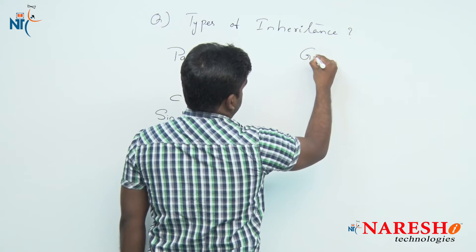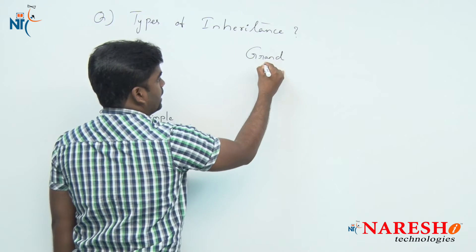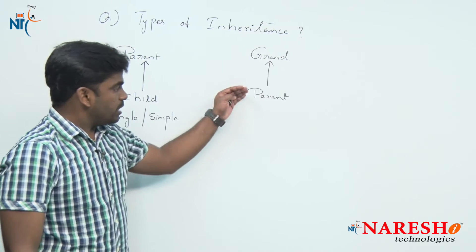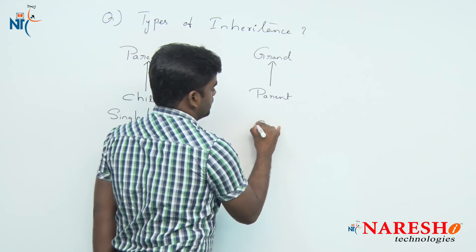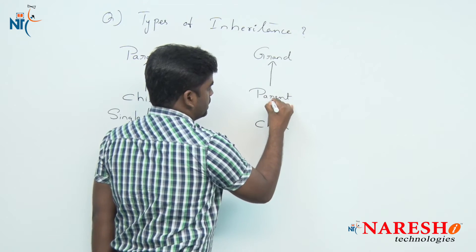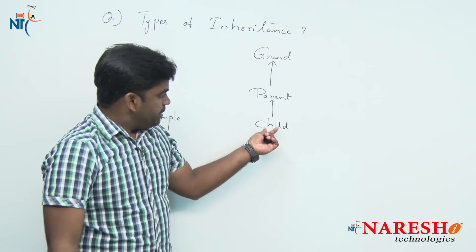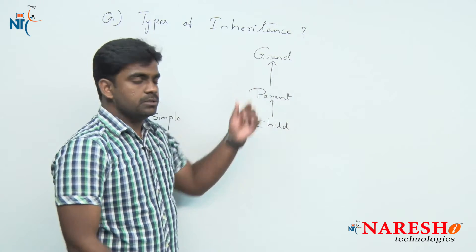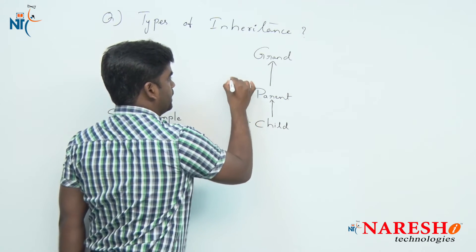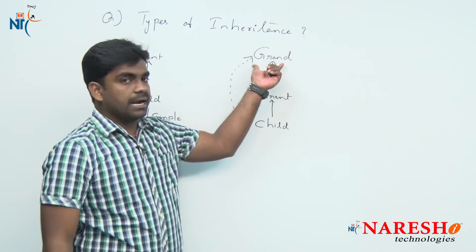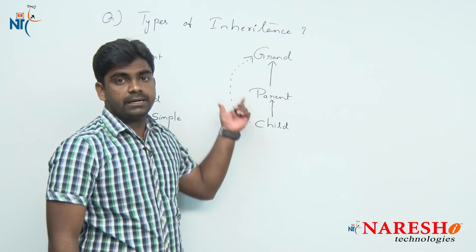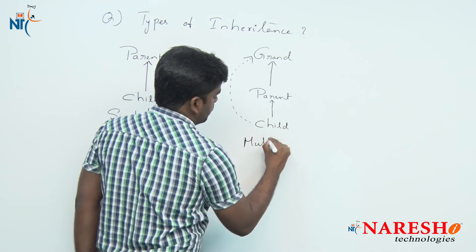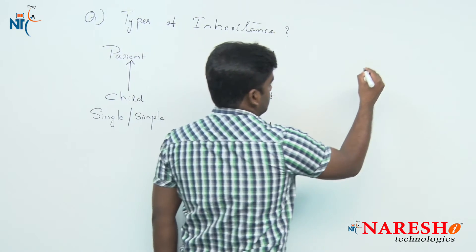For example, there is a grandparent, and a parent that has already extended the functionality of the grandparent. Now, one more level — the child class is extending the functionality of the parent. When a child extends the parent, and the parent has already extended from the grandparent, the child can also access the grandparent's functionality indirectly through the parent — not directly. This is what we call multi-level inheritance.